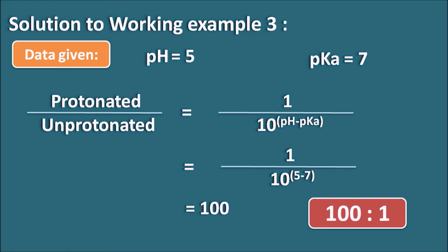In summary, we can calculate the percentage ionization of a drug at any pH using its pKa value. For a weak acid: percentage ionized = [10^(pH − pKa) / (1 + 10^(pH − pKa))] × 100. For a weak base: percentage ionized = 1 / (1 + 10^(pH − pKa)) × 100. The denominator is identical for both; only the numerator differs — 10^(pH − pKa) for a weak acid and 1 for a weak base.